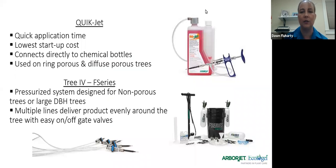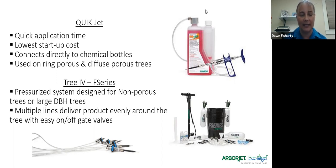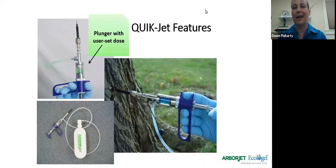The equipment we tend to see used most at this point is the QuickJet and the Tree IV. The QuickJet is a handheld device where your hand is pushing the chemical into the tree. Whereas the Tree IV system is an air pressure system — you put the chemical in the bottle, pump up the bottle, and that air pressure pushes the chemical into the tree. A little less wear and tear on the applicator. Because of COVID-19, we're seeing more use of these two pieces of equipment, mainly because anyone using our air system is finding air difficult to track down, as a lot of those businesses are not essential and are closed.